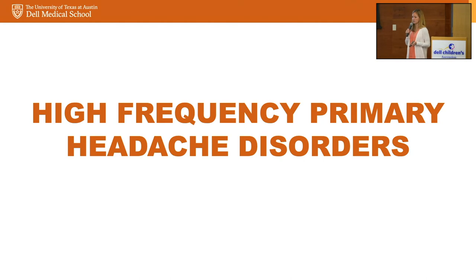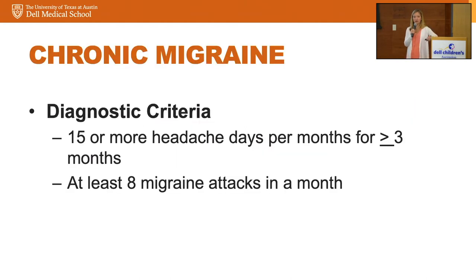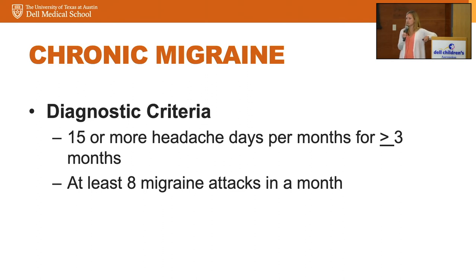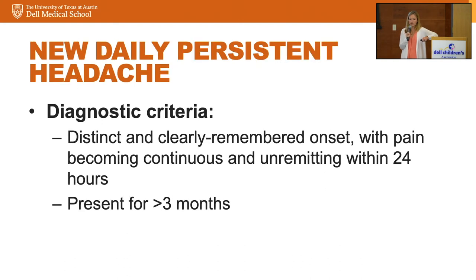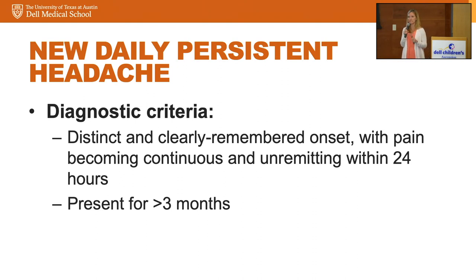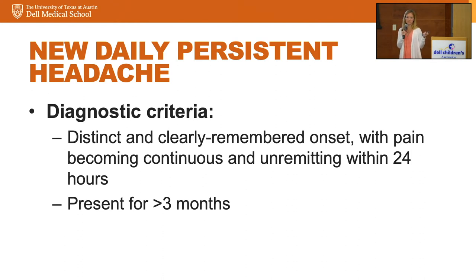For high-frequency primary headache disorders: chronic migraine is diagnosed in any patient having more than 15 headache days a month for more than three months, with at least eight migraine attacks within those headache days. In contrast, new daily persistent headache is an interesting disorder where patients have a remembered onset — they'll tell you on a specific date they woke up and headache has been daily and continuous since, with no pain-free moments, for at least three months. The term 'daily chronic headache' is now outdated; these patients fall into either chronic migraine or new daily persistent headache.